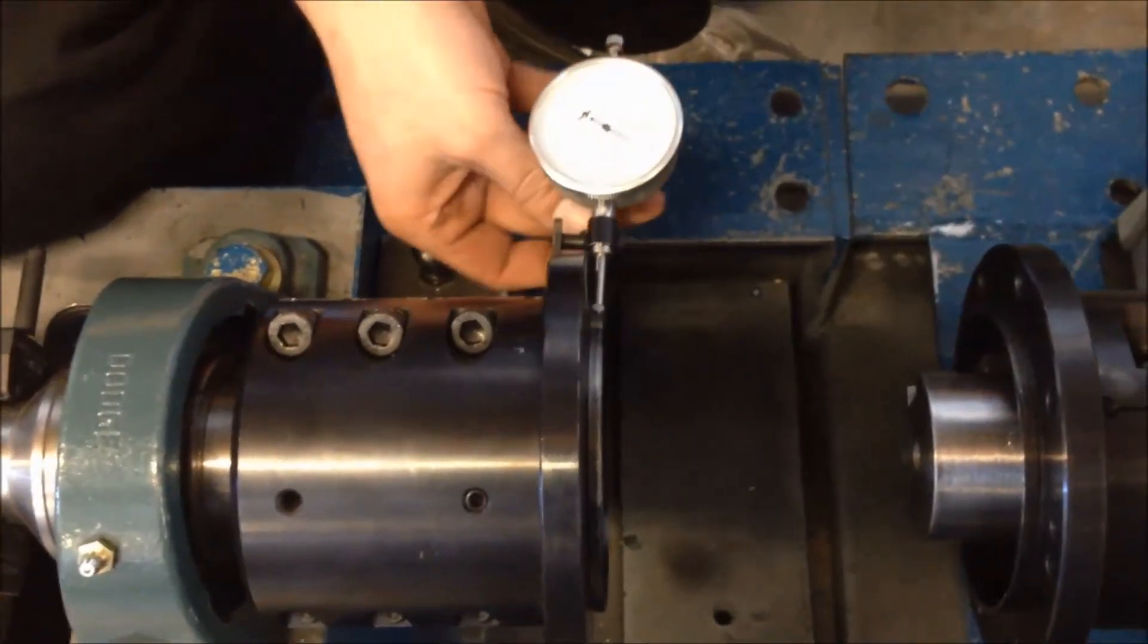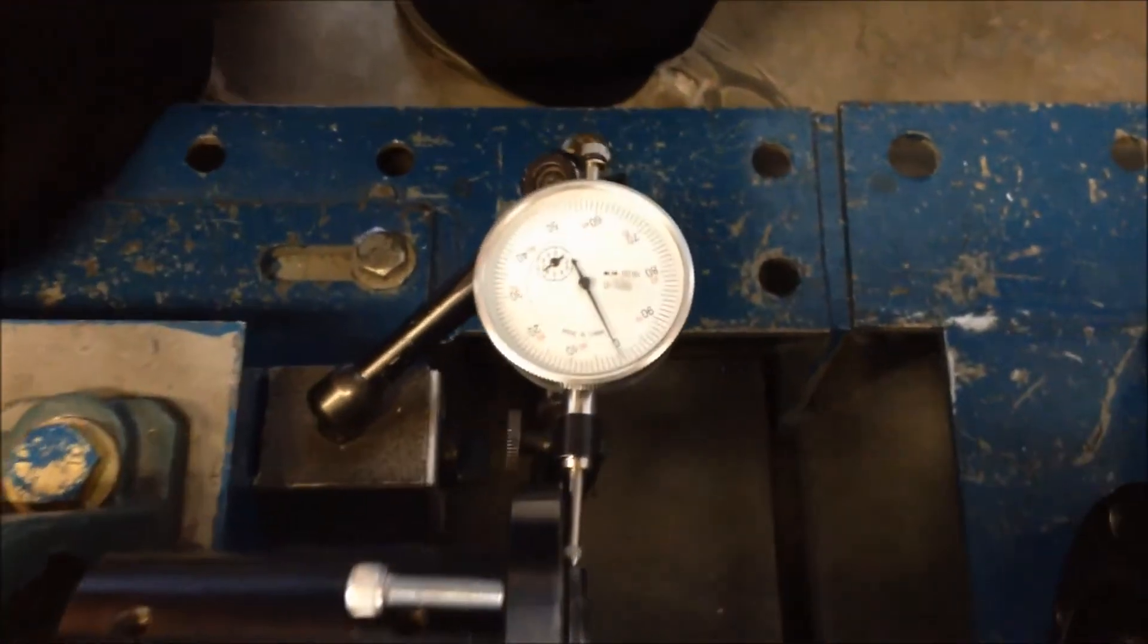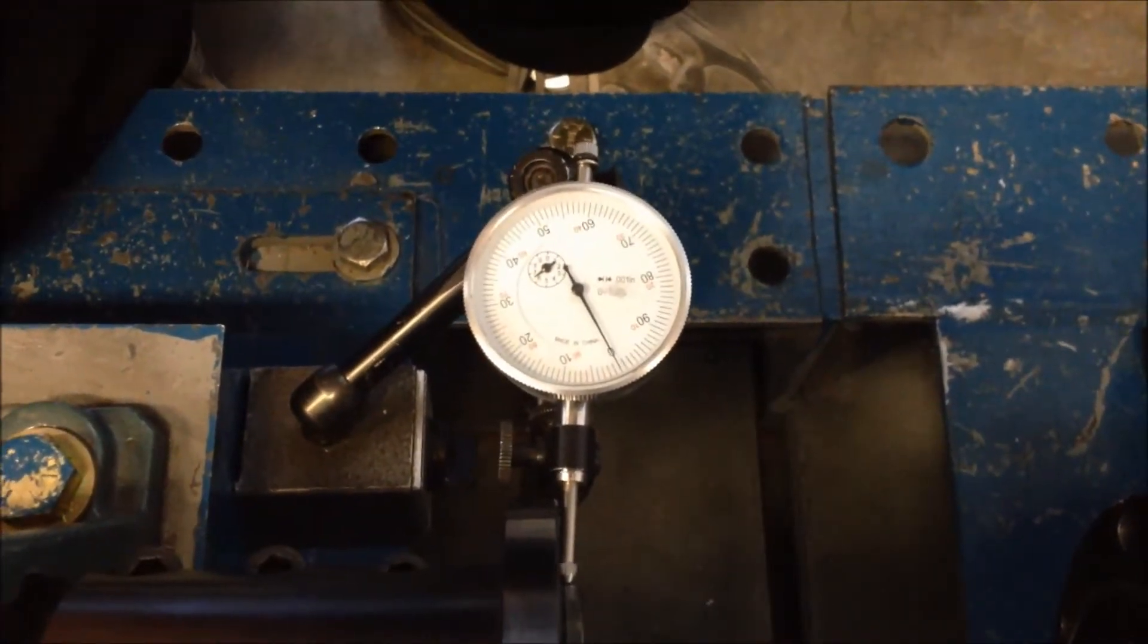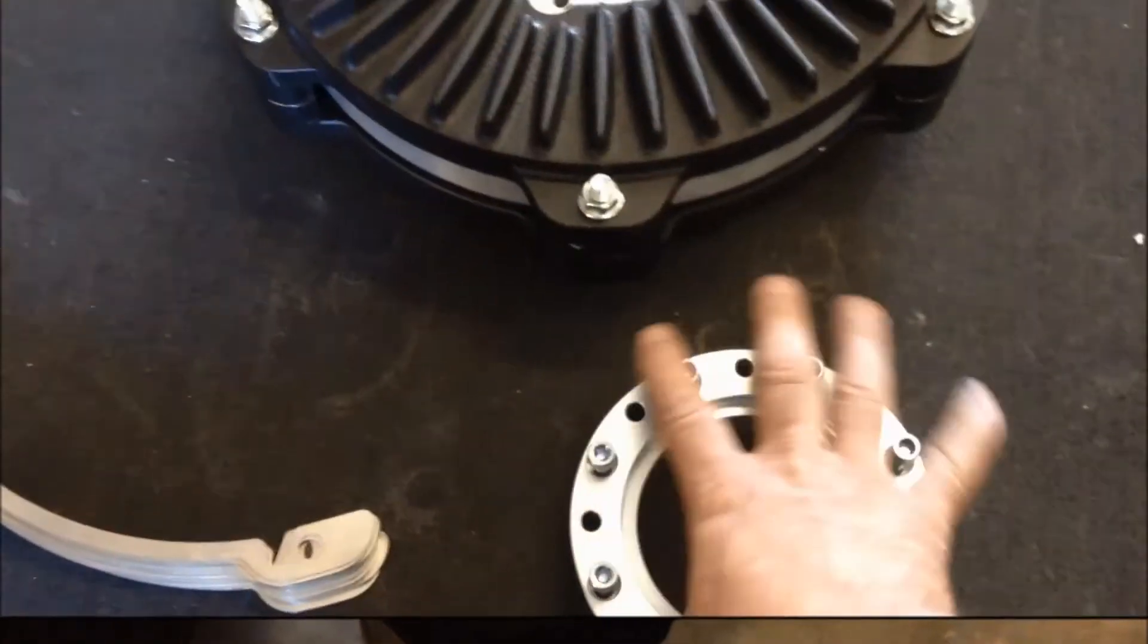Place the dial indicator on the hub pilot and verify that the total indicated run out is less than five thousandths for 1800 RPM applications and three thousandths for 3600 RPM applications.